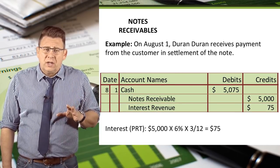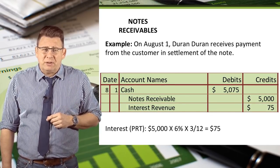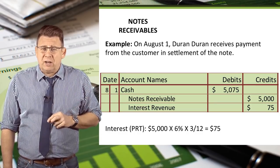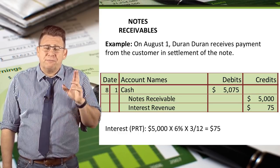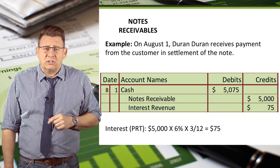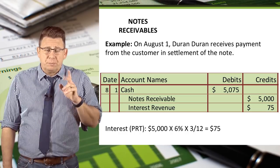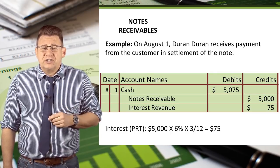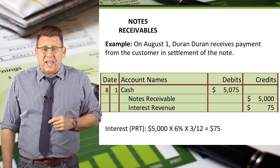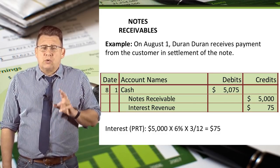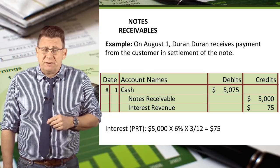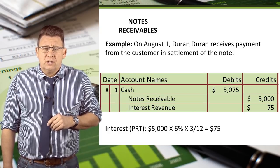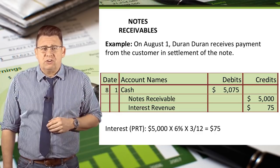Assume on August 1, Duran Duran receives payment from the customer in settlement of the note. The journal entry to record the settlement is a debit to cash for $5,075, which equals the principal plus the interest. There is a credit to notes receivable for $5,000 to remove that account from our books, and a credit to interest revenue for $75 for the 3 months of interest earned. You can see the interest calculation on the slide here.